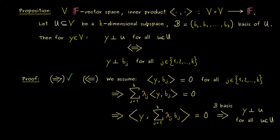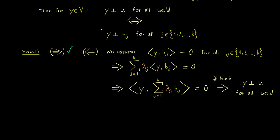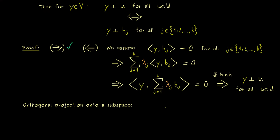So you see, now we can conclude, if we want to find an element in the orthogonal complement, we just have to check the orthogonality for the basis. And indeed this one helps a lot, if we want to calculate the orthogonal projection onto a subspace.